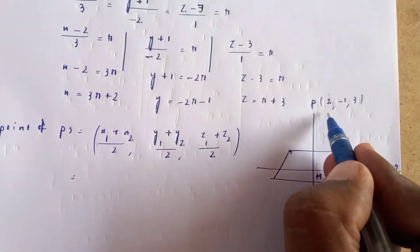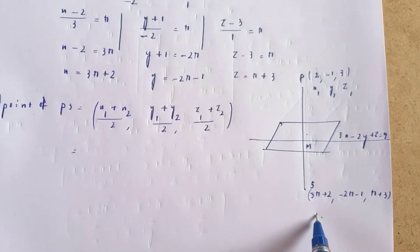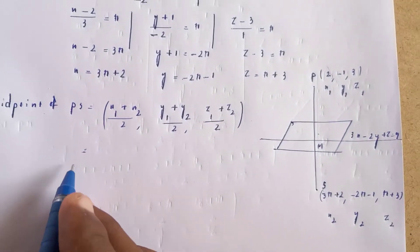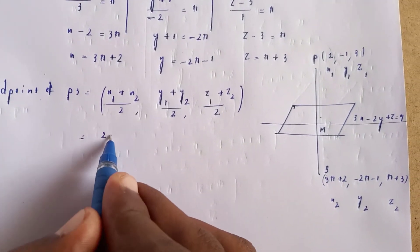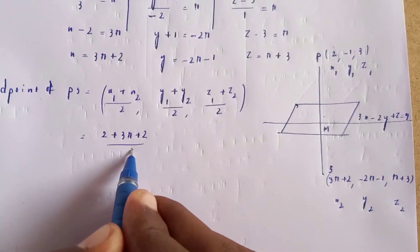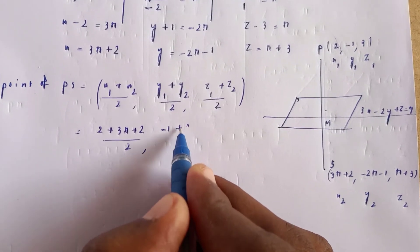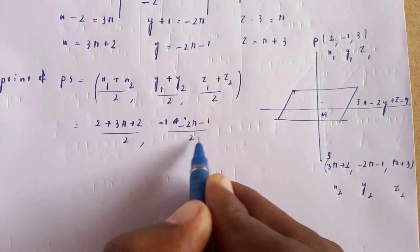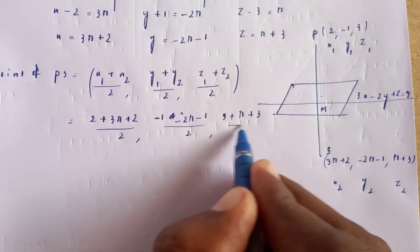Let the image point be (x2, y2, z2). The original point is (x1, y1, z1) = (2, -1, 3). The image is (3r + 2, -2r - 1, r + 3). The midpoint is: ((2 + 3r + 2)/2, (-1 + (-2r - 1))/2, (3 + r + 3)/2).